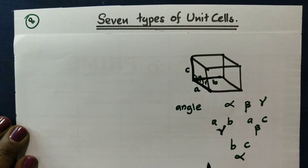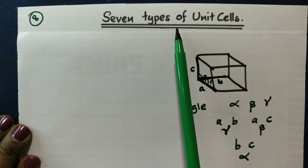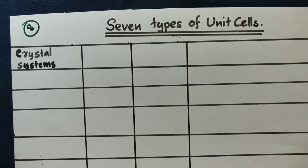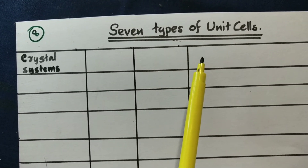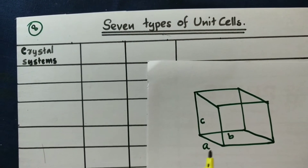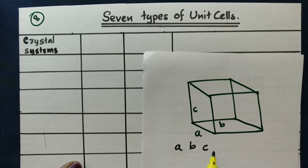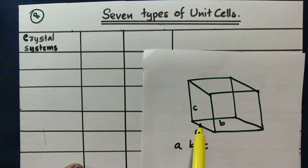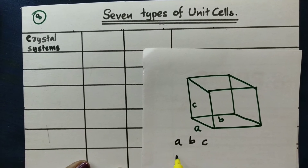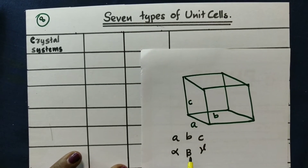A, B, C — axial length. ABC is called axial length. There are 3 angles: alpha, beta, gamma. Together, we have 6 parameters.